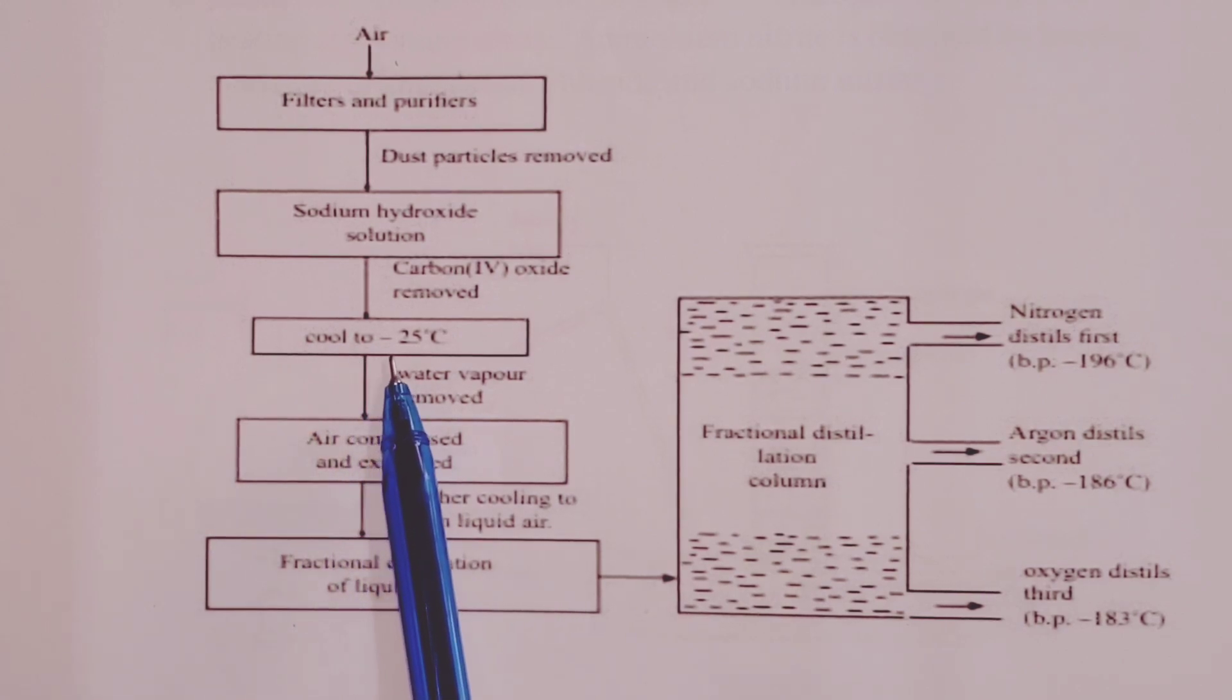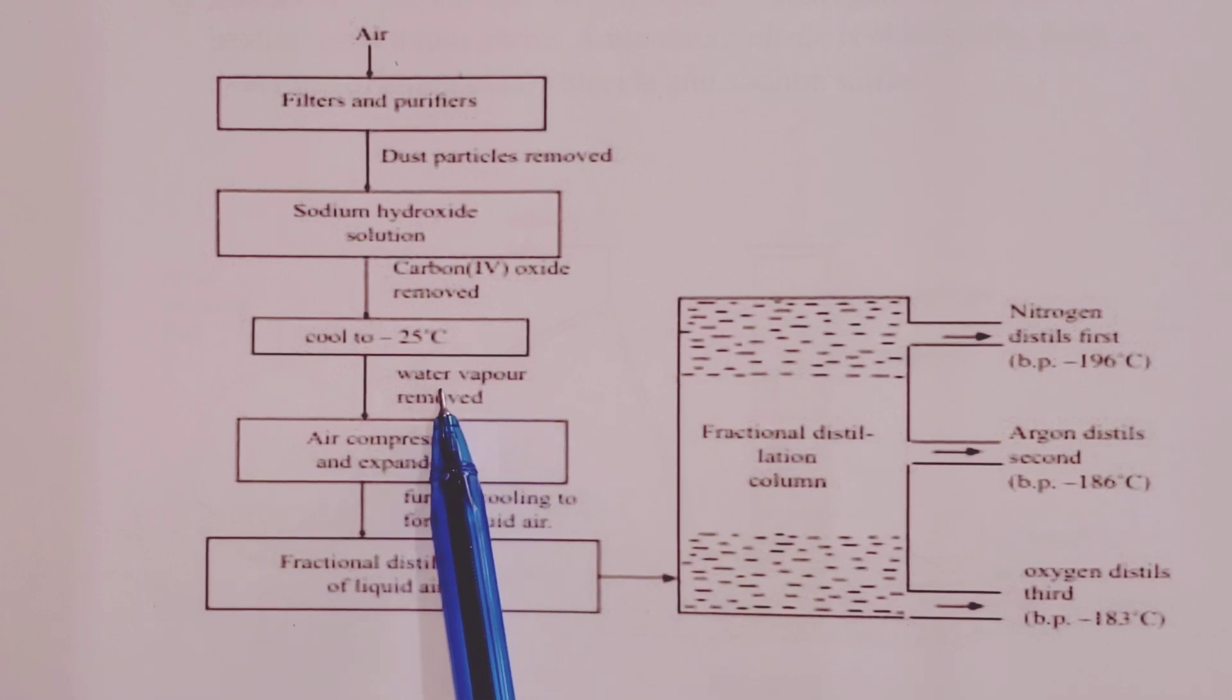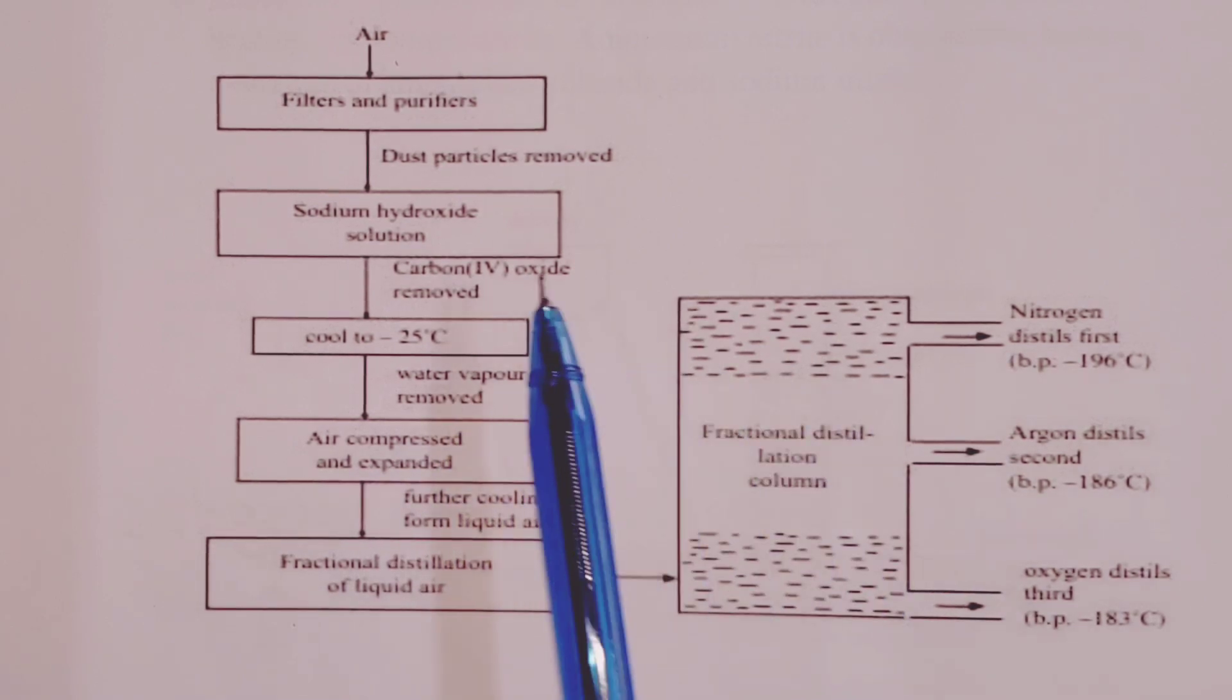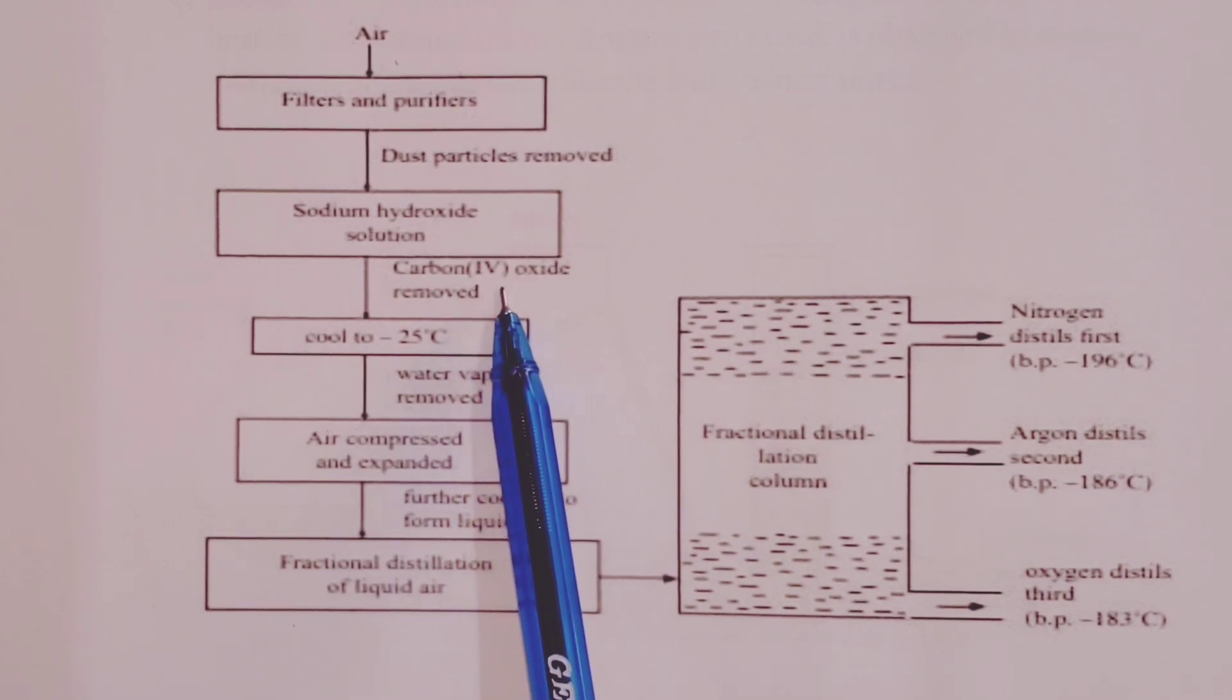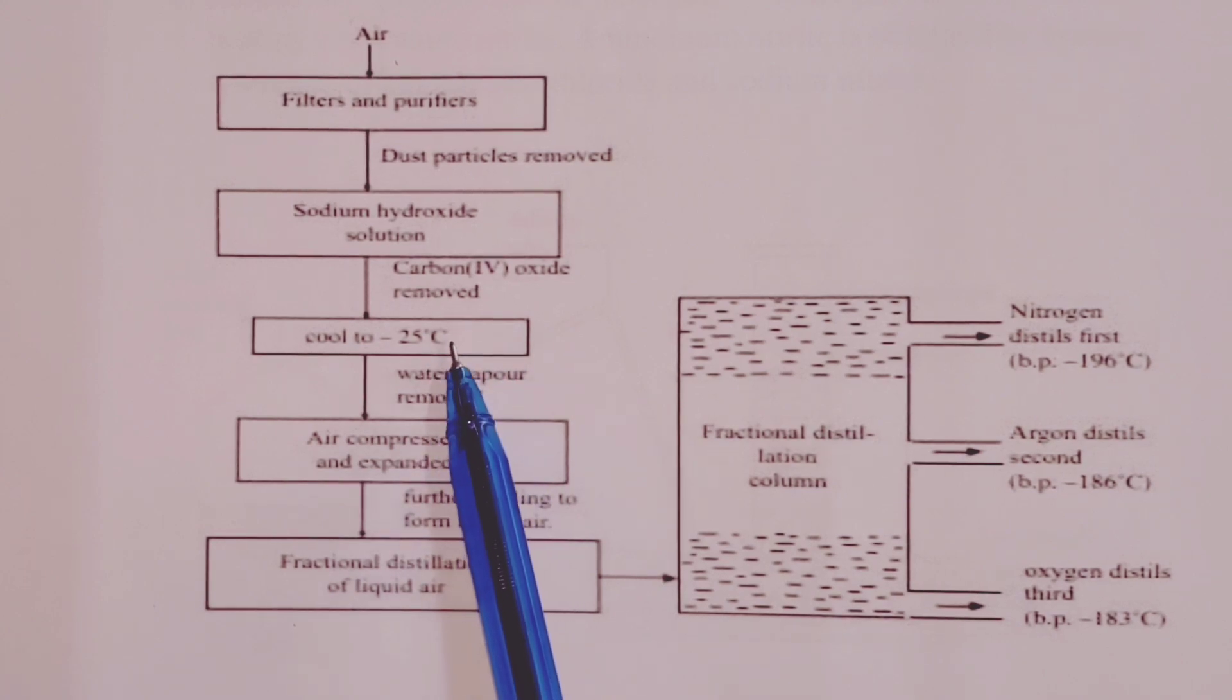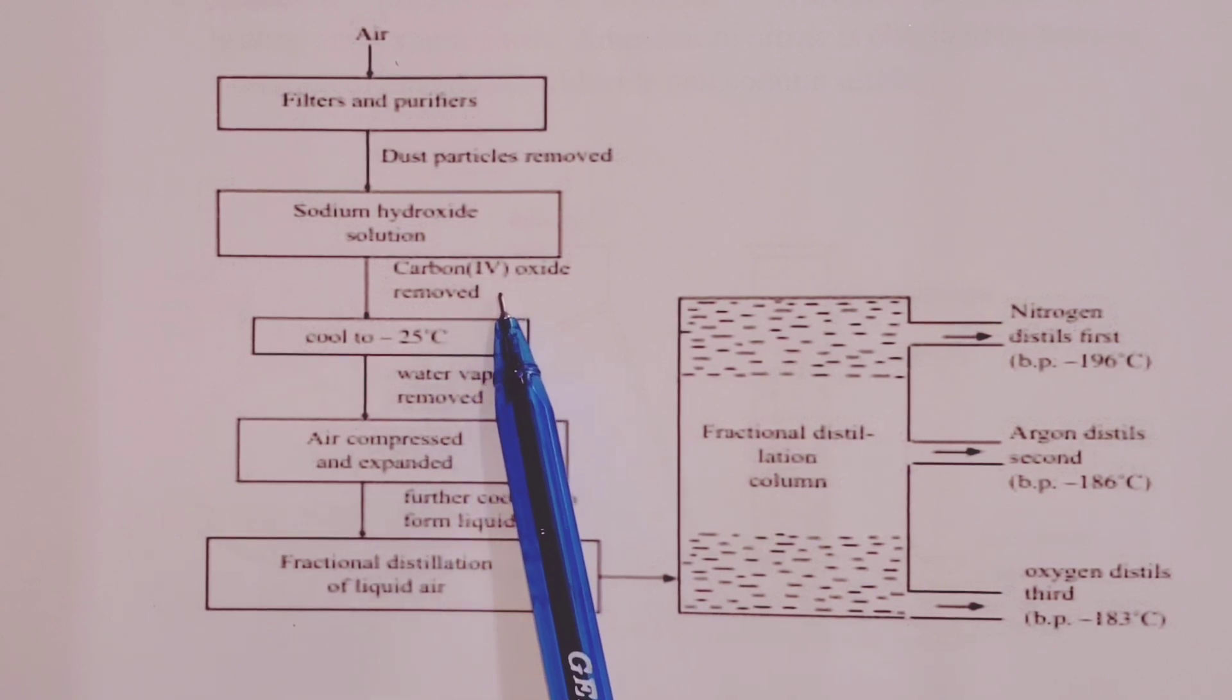we shall cool air to about negative 25 degrees Celsius, where water vapor shall be removed in form of ice. Now, why we remove water vapor and carbon (IV) oxide is that at low temperatures, these two substances will have formed solids. Water vapor would have formed ice and carbon (IV) oxide would have formed solid carbon (IV) oxide.